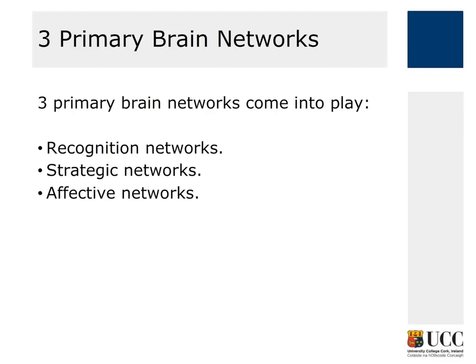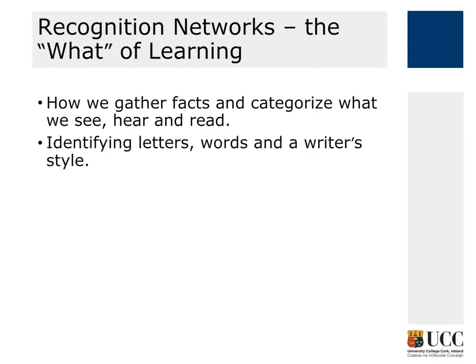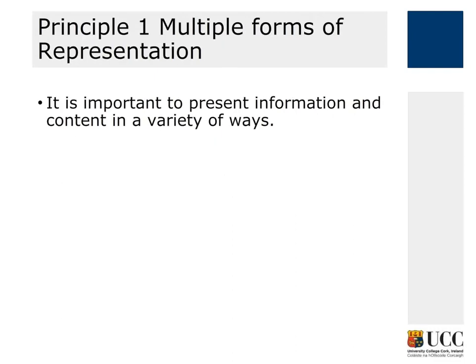The first are recognition networks — the what of learning. This is how we gather facts and categorize what we hear, see, and read, and where we identify letters, words, and a writer's style. This leads us to principle one: multiple forms of representation. It is important to present information and content in a variety of ways.